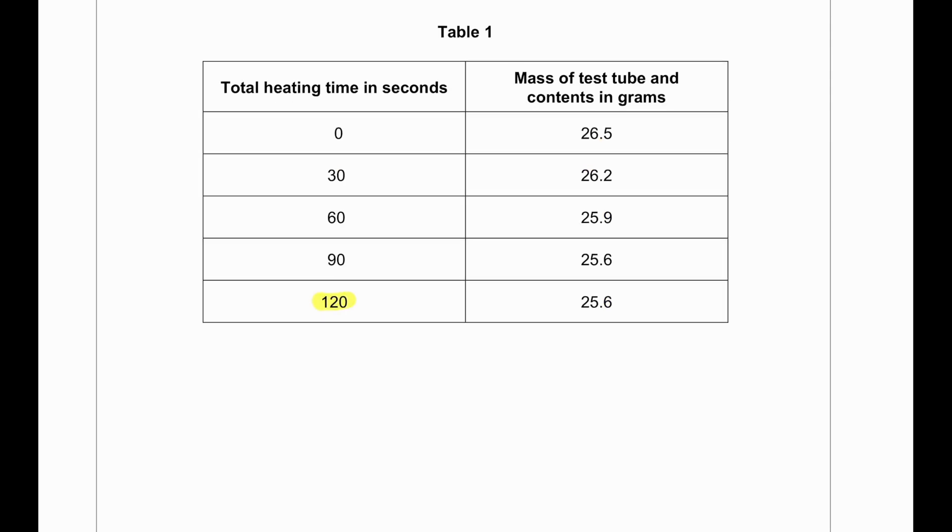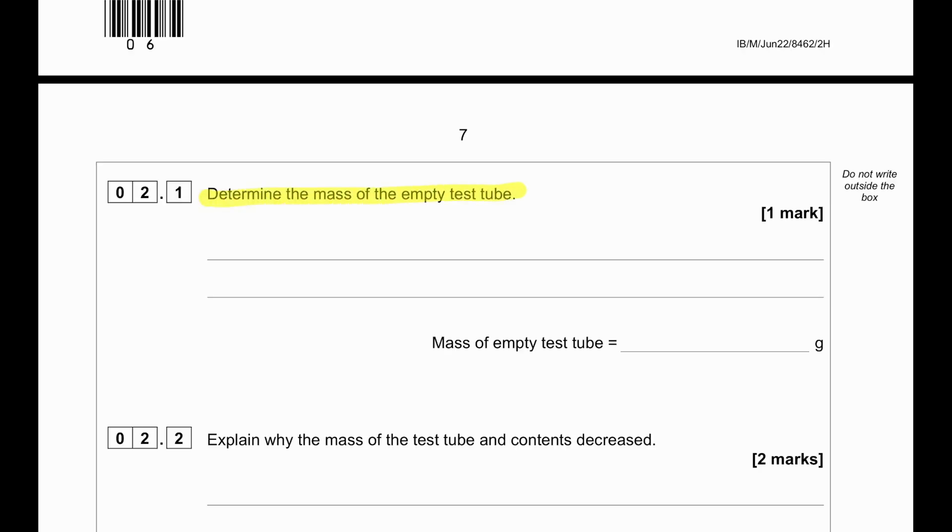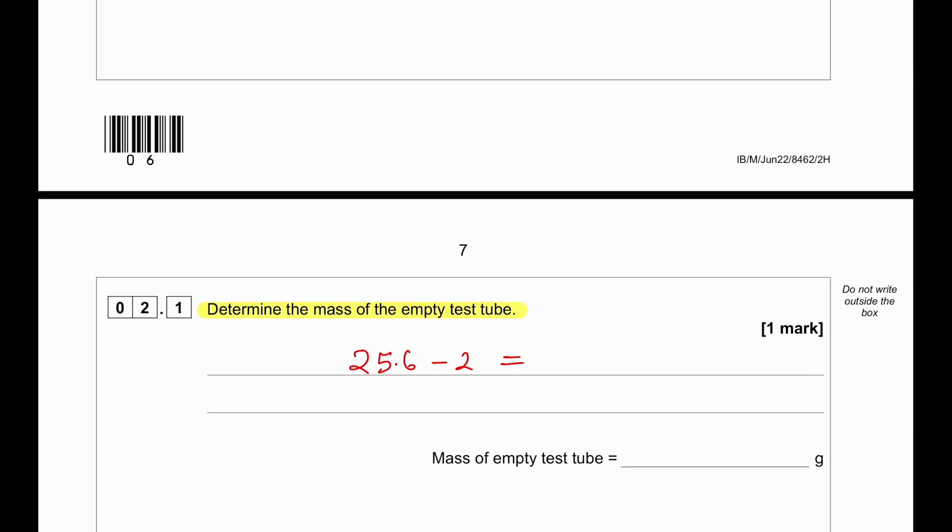The heating time in seconds goes up to 120 seconds and the mass changes from 26.5 to 25.6 grams. Determine the mass of the empty test tube. Since our original starting mass is 26.5 and we have taken 2 grams of hydrated cobalt chloride, our mass will be 24.5.